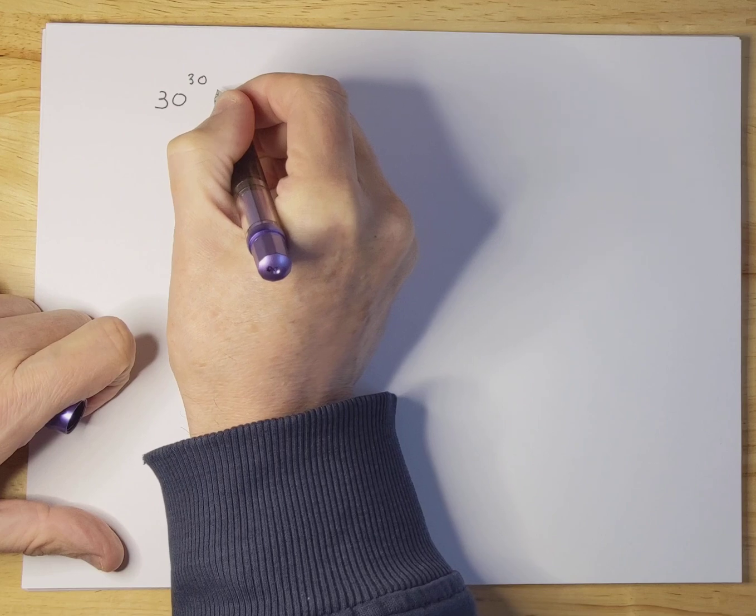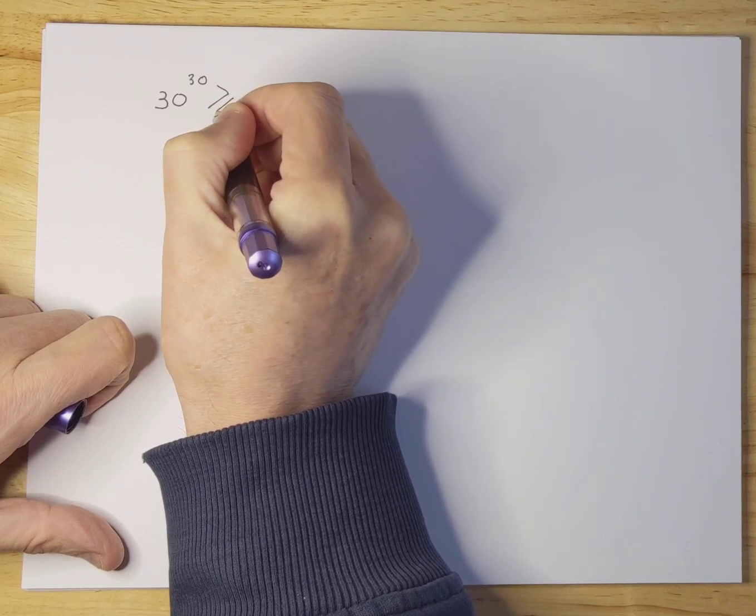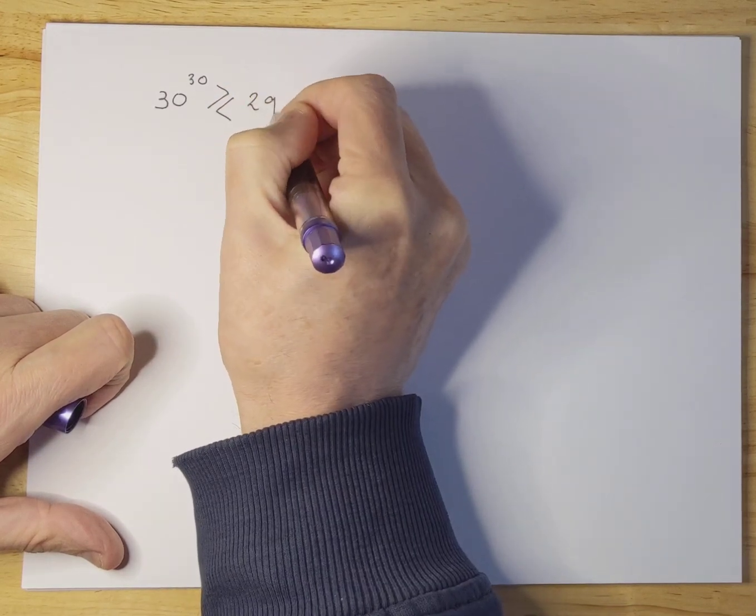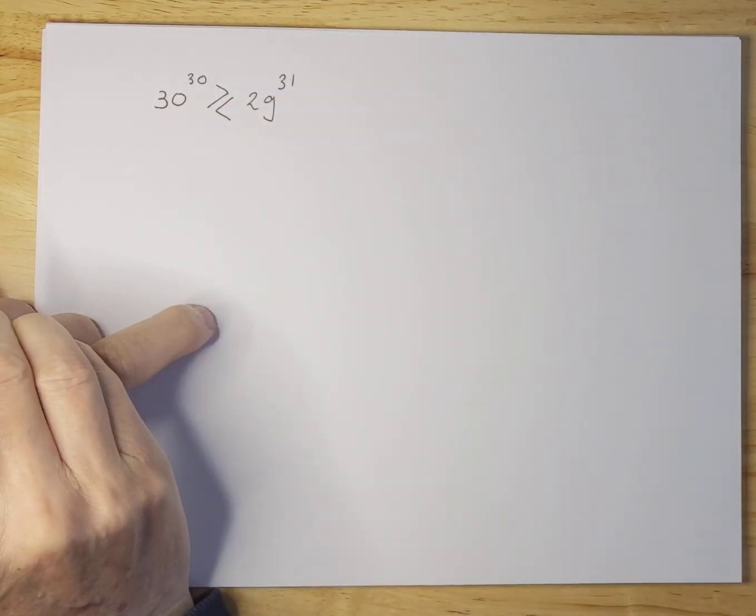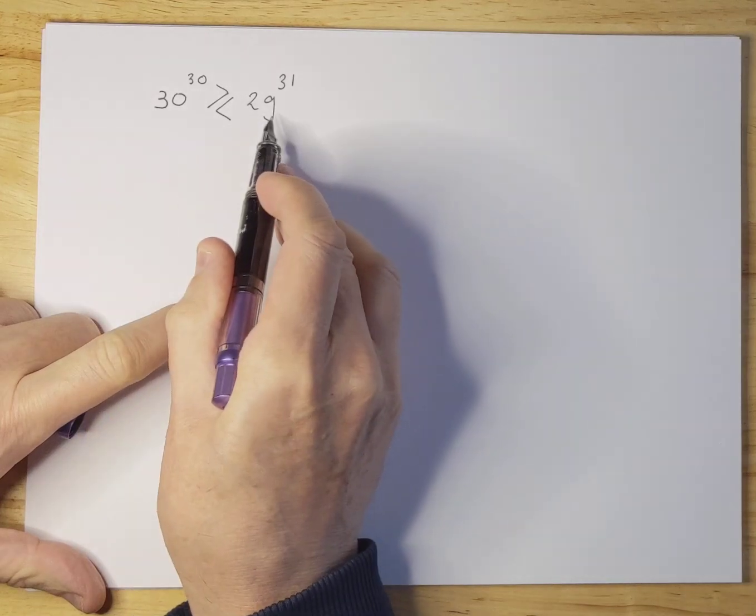What you see lately a lot on the internet is things like this. So the question is asked whether 30 to the 30 is bigger or smaller than 29 to the 31. So which number is bigger, this one or this one?